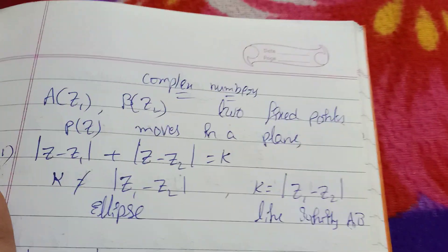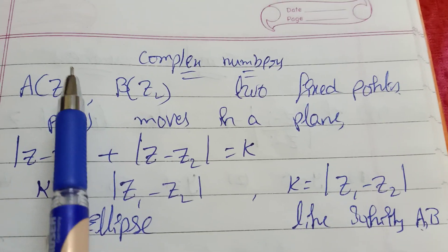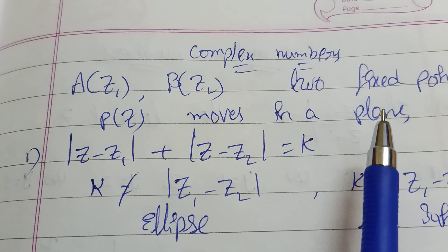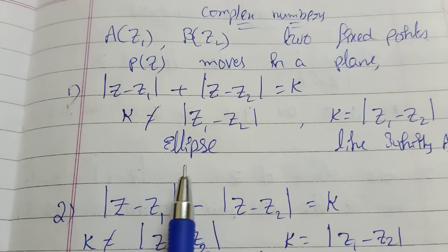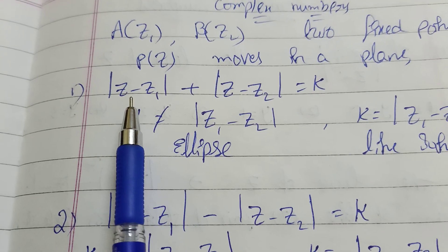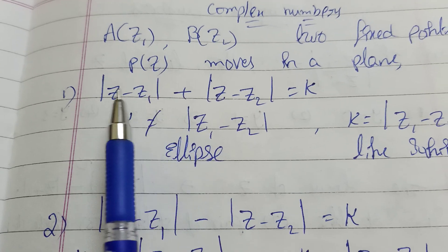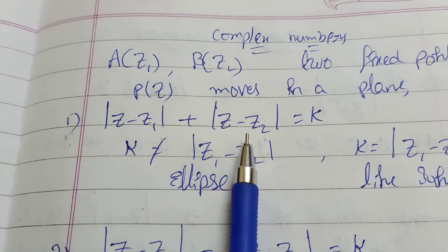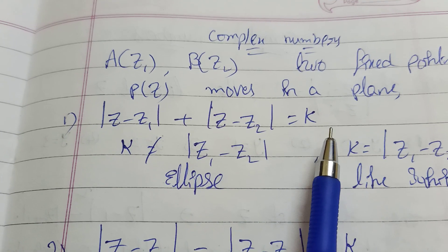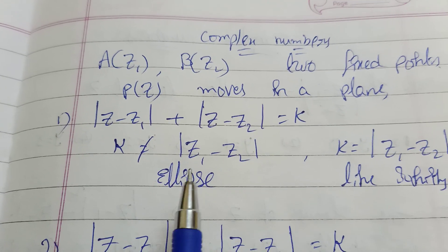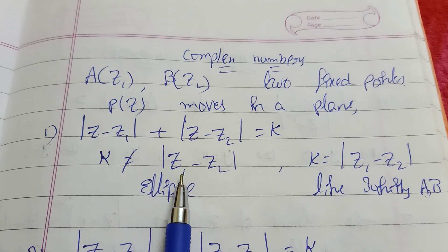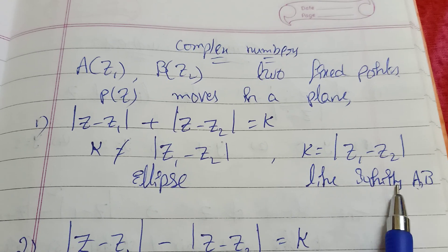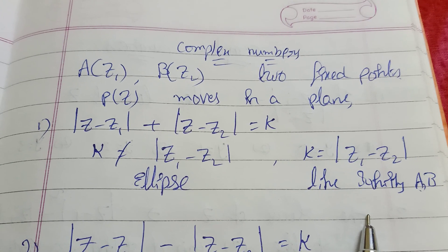Now come to the point. Shortcut: Z1 and Z2 are two fixed points, and point P moves in the plane. The modulus of z minus Z1 plus modulus of z minus Z2 equals k, where k is a constant. If k is not equal to the modulus of z1 minus z2, we get an ellipse.